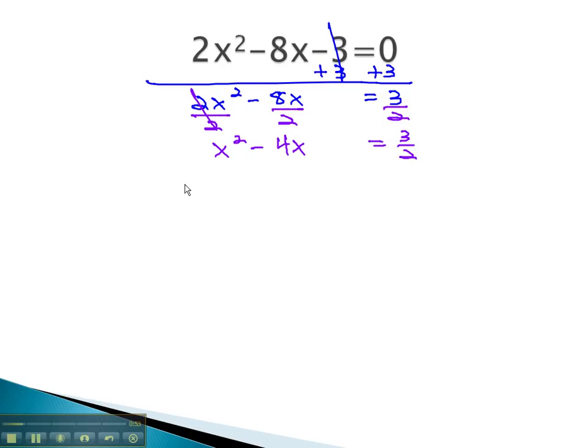Now we're ready to complete the square by finding the c, which is 1/2 times b, or -4 in this case, squared. 1/2 of -4 is -2 squared, which is 4.